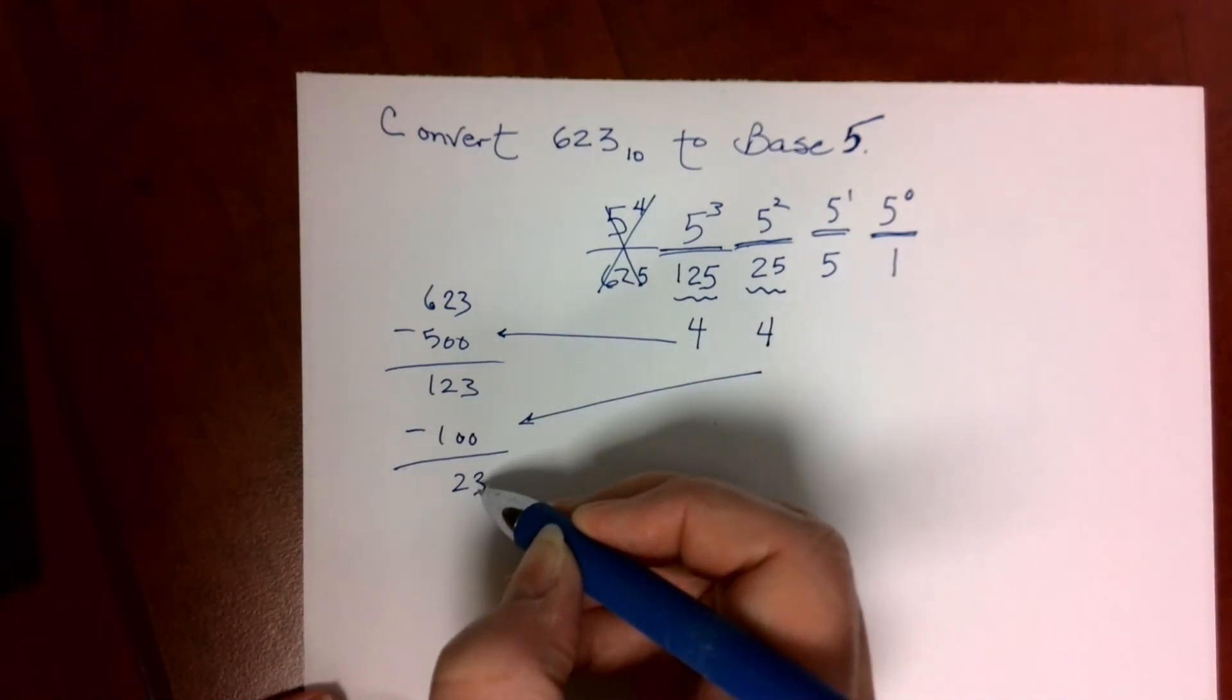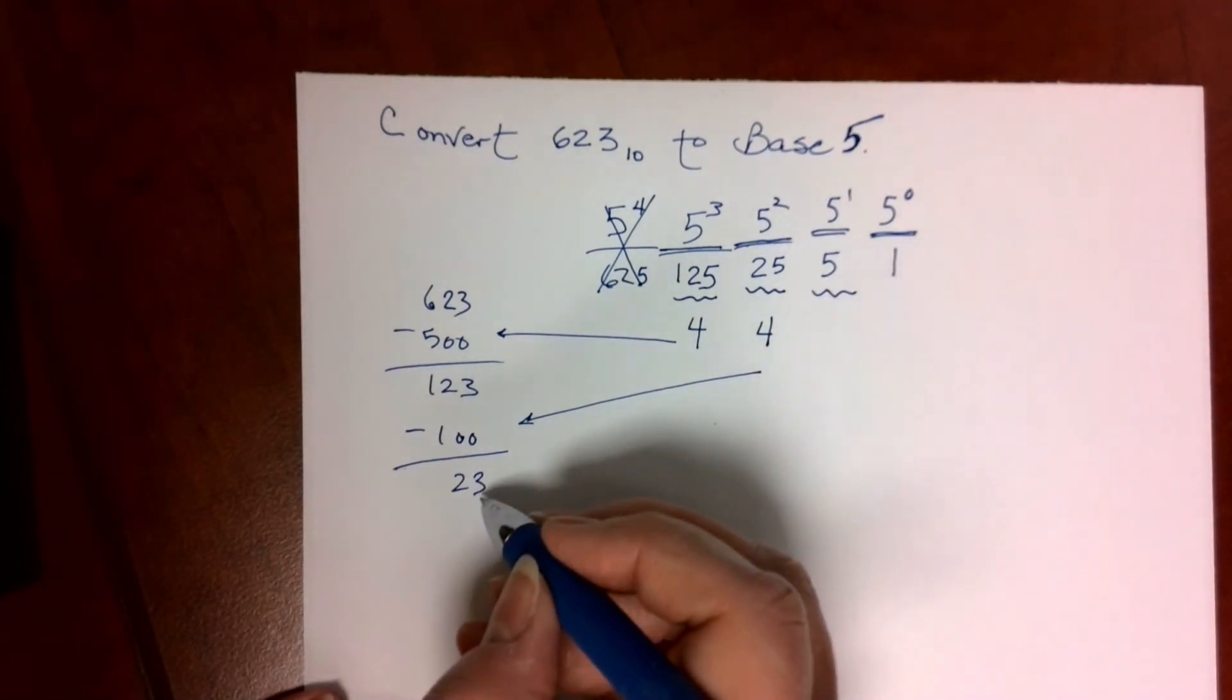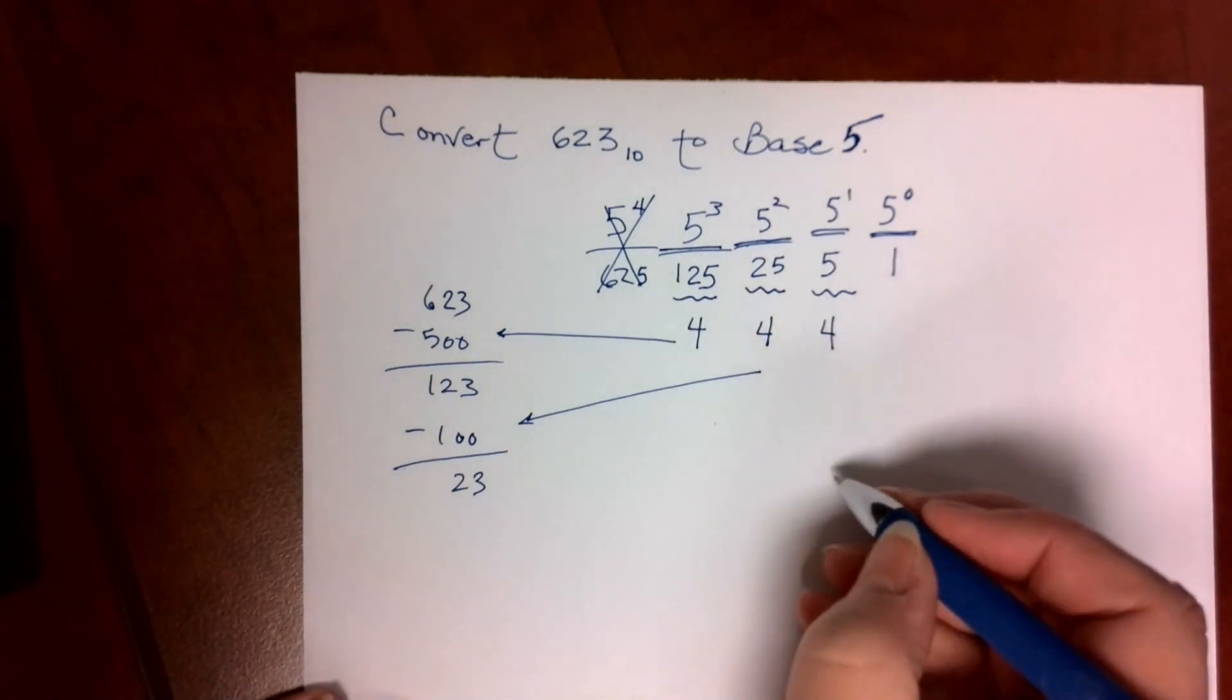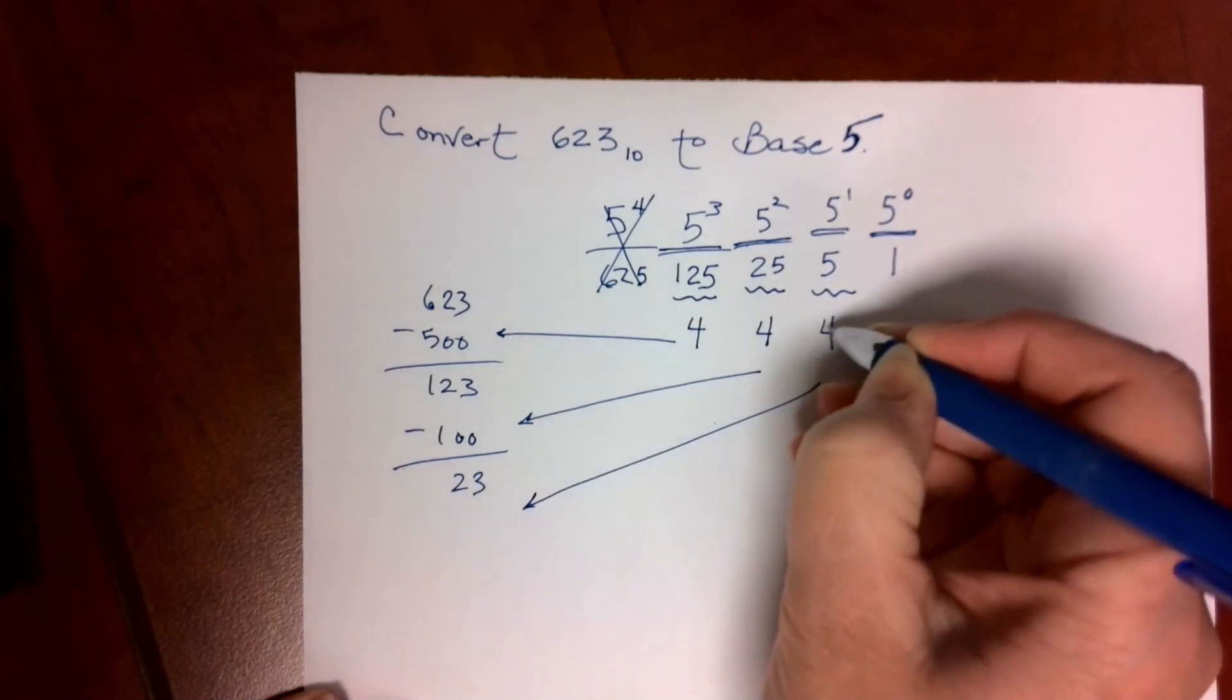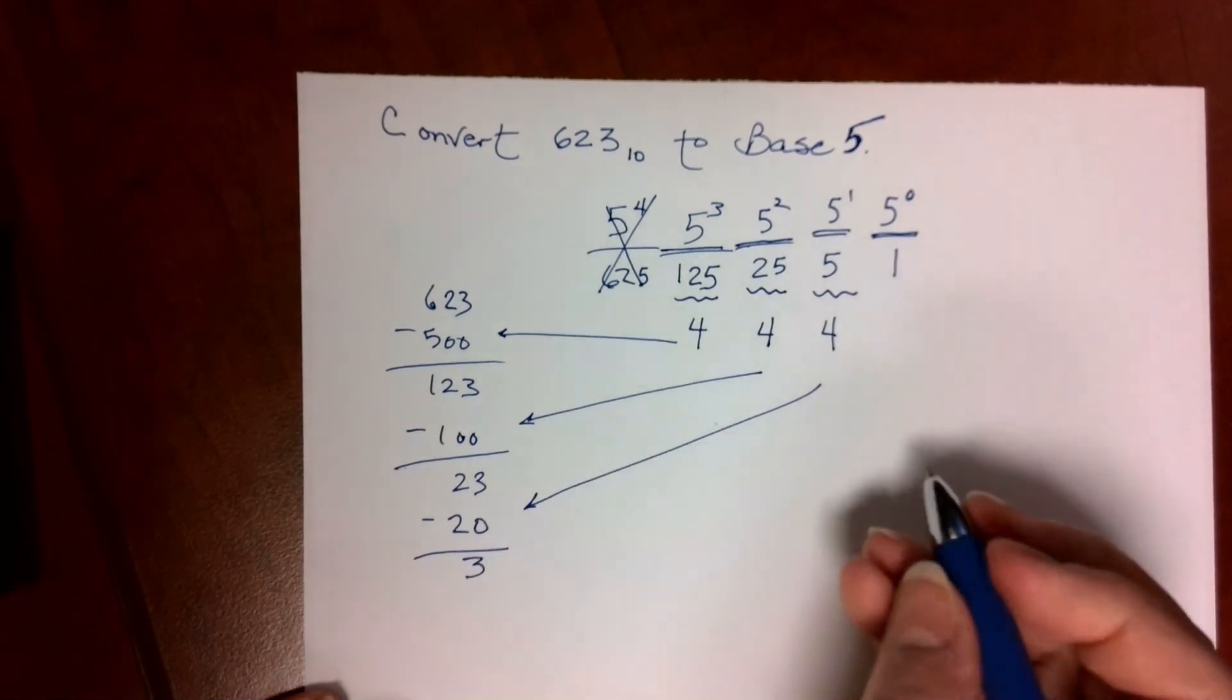I have 23 left. Now I ask myself, how many 5s will go into 23? 4 groups of 5 go into 23. 4 5s is 20, and I need to subtract that from what I already had.